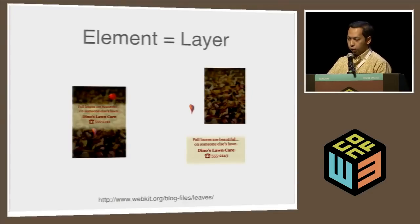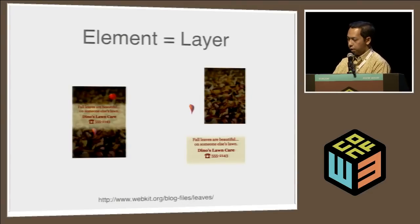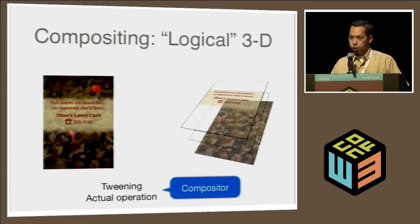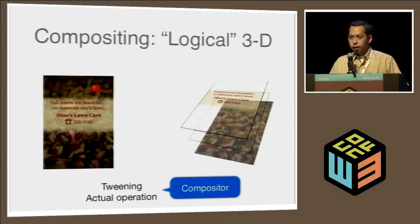What you see demonstrated in Safari is the logical 3D view from the top — the GPU has all these layers on top of each other, and we just apply a matrix transformation to move the leaves around. This is called compositing, and the compositor figures out what to do with all those layers. The tweening part — computing which position to apply to each layer — is usually done on the CPU, while the actual matrix transformation is done on the GPU. One benefit is that we can put the compositor on a different thread so it won't block the main UI thread.